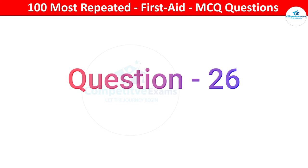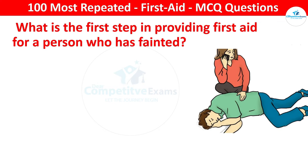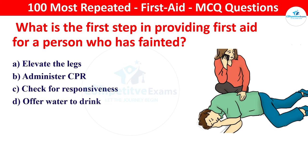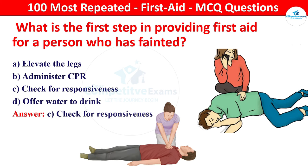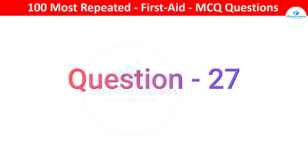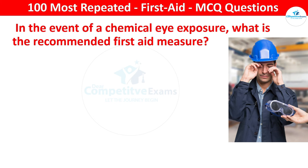Next question: what is the first step in providing first aid for a person who has fainted? Options: elevate the legs, administer CPR, check for responsiveness, or offer water to drink. The right answer is check for responsiveness. Assessing responsiveness helps to determine the appropriate course of action for a person who has fainted.